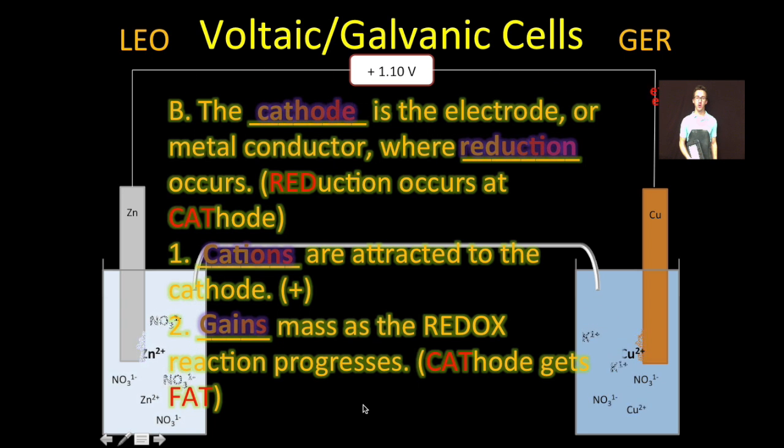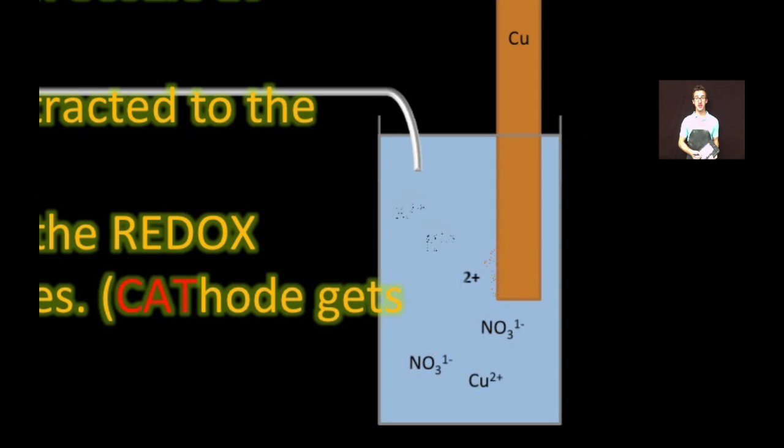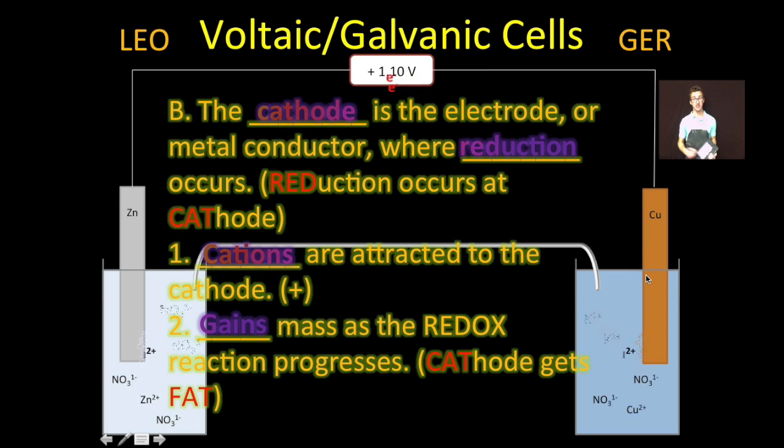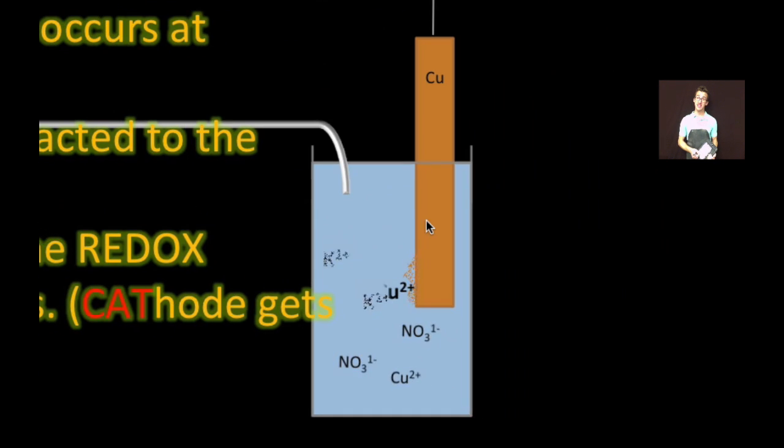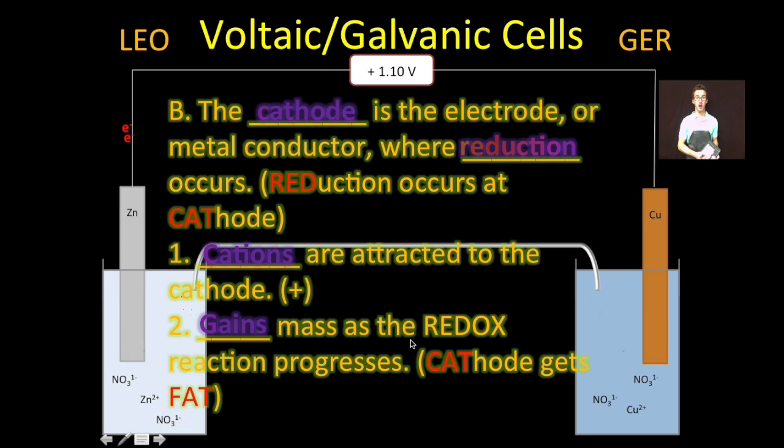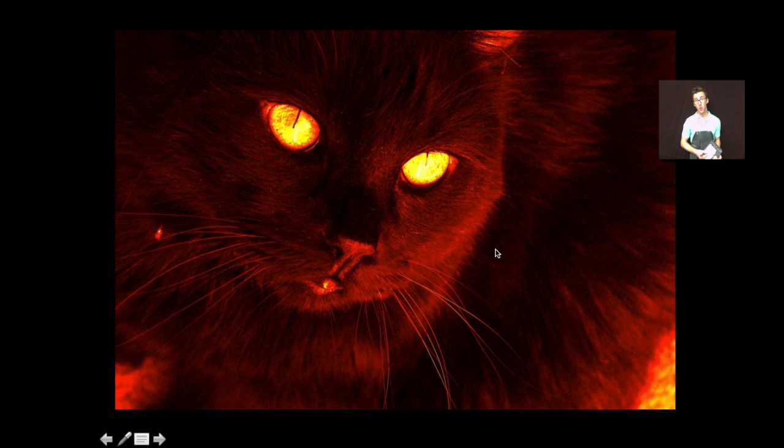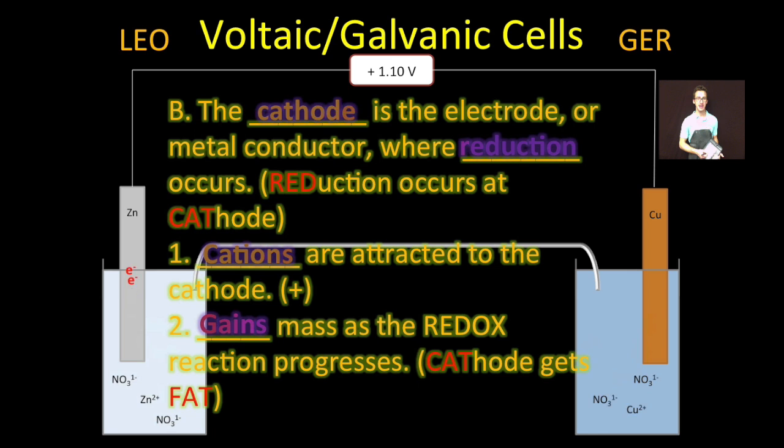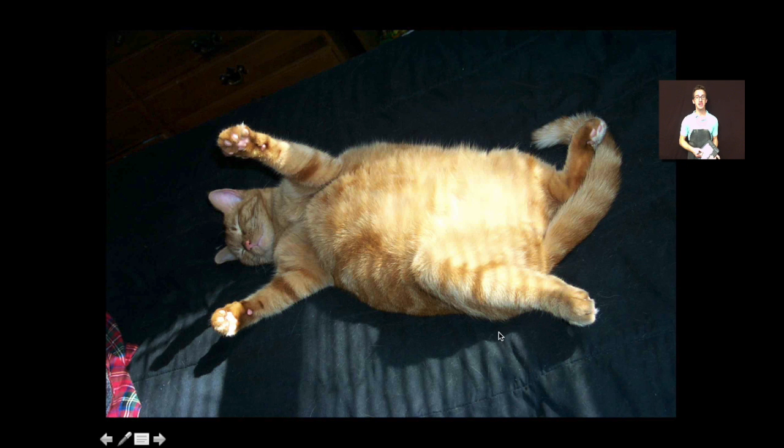The cathode is the electrode or metal conductor where reduction occurs. So in this voltaic cell, copper represents my cathode. Things to know about the cathode: cations from the salt bridge are attracted to the cathode. It will also gain mass as the redox reaction occurs. The reason why it's gaining mass is because as electrons flow from the anode to the cathode, the copper ions that are in solution pick those electrons up and plate out onto the cathode, increasing its mass. Some important mnemonic devices here: Red cat, or reduction occurs at the cathode. And fat cat, the cathode gets fat, gains mass as the reaction proceeds. Looks like this cat has been reduced for quite some time.